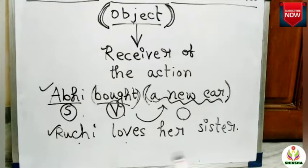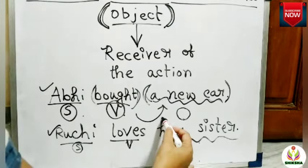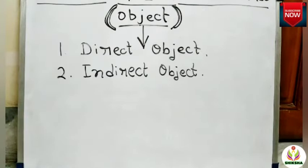Let's see another example: 'Ruchi loves her sister.' Ruchi is the subject, loves is the verb. Now if I ask 'Ruchi loves whom?' the answer is 'her sister.' So here, 'her sister' is helping the sentence to complete its meaning and is working as an object.